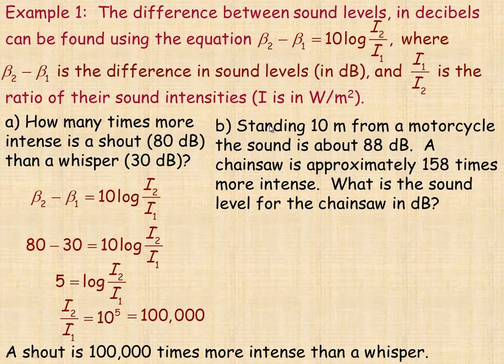For question B here, it says standing 10 meters from a motorcycle, the sound is about 88 decibels. A chainsaw is approximately 158 times more intense. So the number of watts per square meter would be 158 times more intense. So the 158 is actually this ratio here. And then we're asked to find what's the decibel level for a chainsaw.